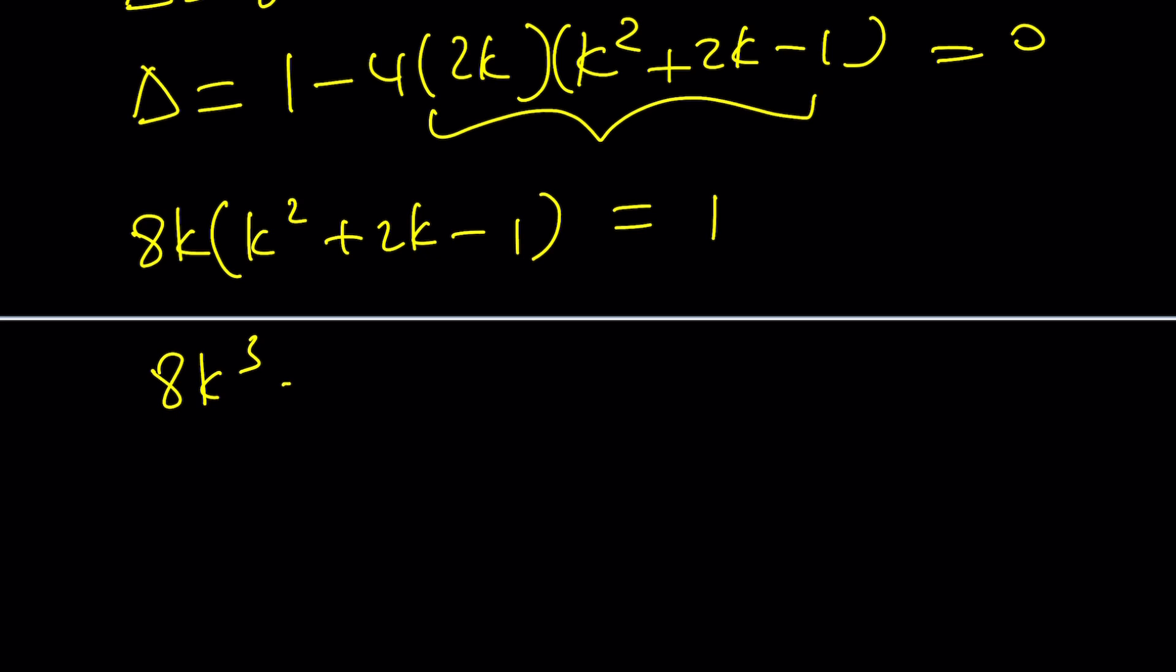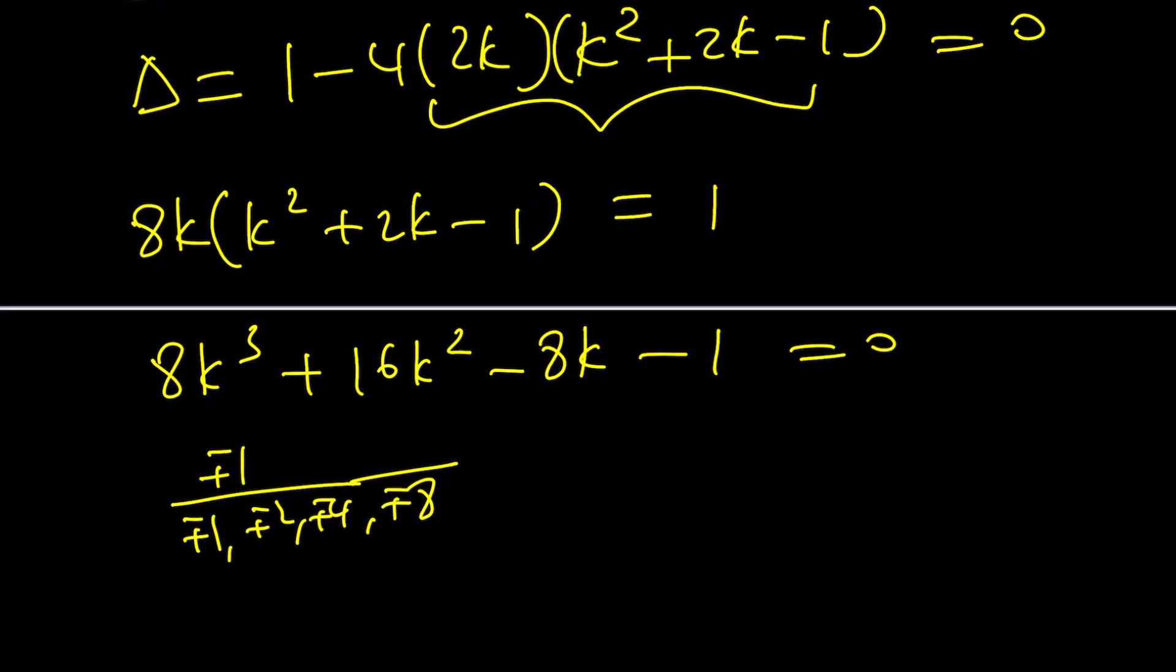Now go ahead and distribute 8k cubed plus 16k squared minus 8k minus 1 equals 0. And then now you need to solve a cubic. Or you can use the rational root theorem. Divisors of 1 divided by divisors of 8. All possibilities. Kind of like plus minus 1. And then at the bottom you're going to have plus minus 1, plus minus 2, plus minus 4, plus minus 8. The rational root theorem tells us that it's probably going to be a fraction because 1 doesn't work. Negative 1 doesn't work. Evens and odds, they don't work. So it must be something like plus minus 1 half or plus minus 1 fourth or plus minus 1 eighth. Something like that.